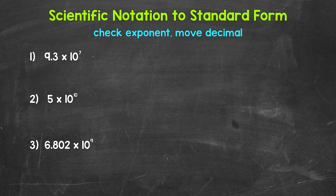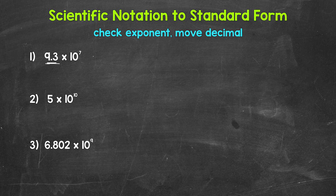Let's jump into our examples, starting with number 1, where we have 9.3 times 10 to the 7th power. This is actually about the distance in miles that the Earth is from the Sun, so we have a large number here, a really far distance. Let's write this in standard form. All we need to do here is check the exponent and move the decimal. We'll start by writing 9.3 off to the side — whatever is to the left of the multiplication sign.